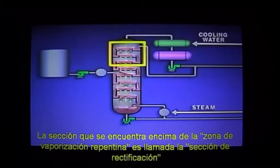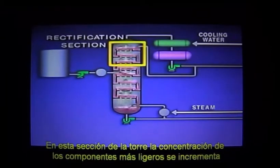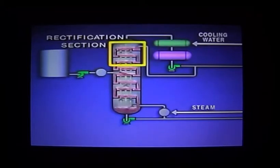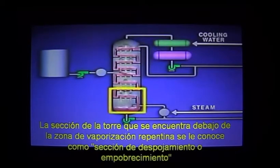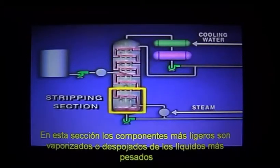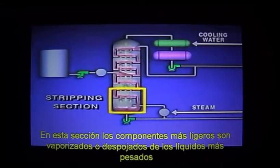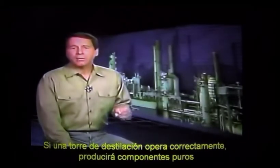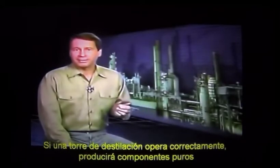The section above the flash zone is called the rectification section. In this part of the tower, the concentration of lighter components increases. The section of the tower below the flash zone is called the stripping section. In this section, the lighter components are vaporized or stripped from the heavier liquid.